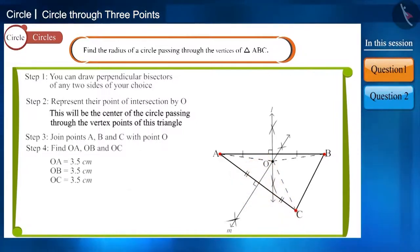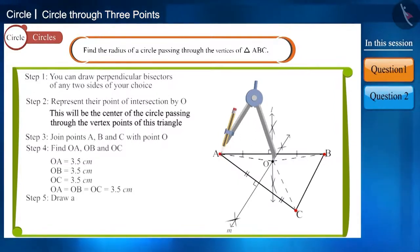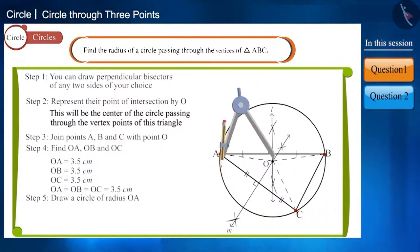You can see that the length of these three are equal. Take the length of OA in the compass and keeping its pointed end at point O, draw a circle. Definitely, the circle will pass through vertices A, B and C.